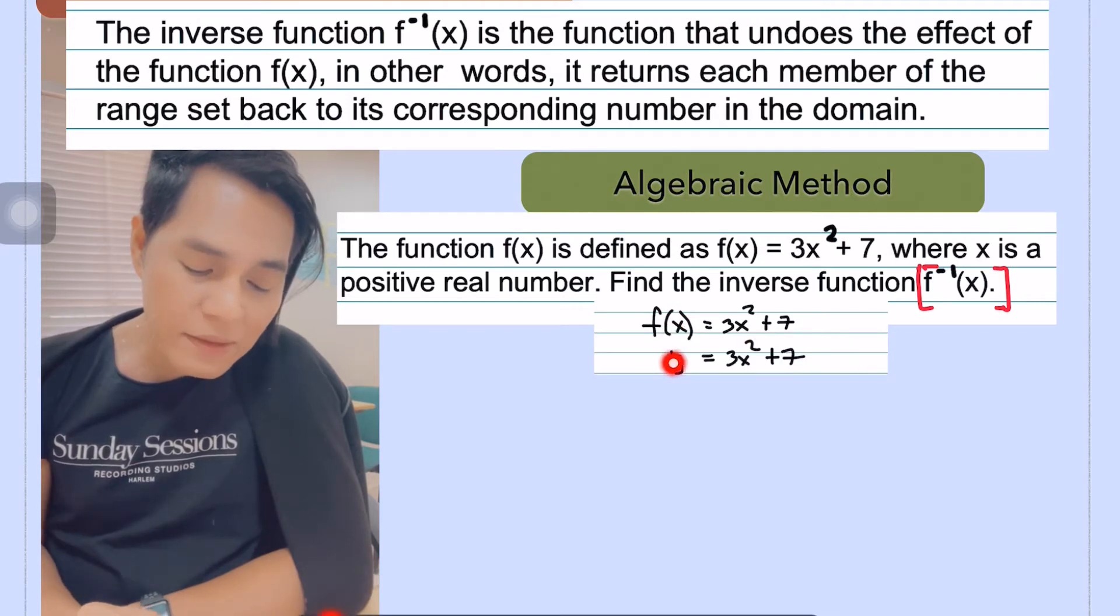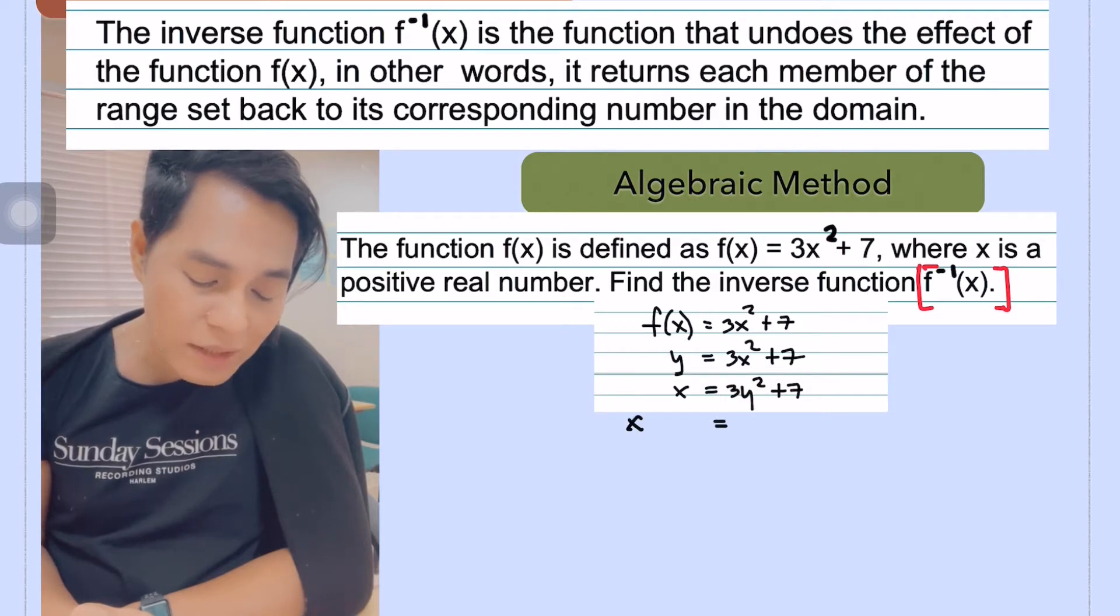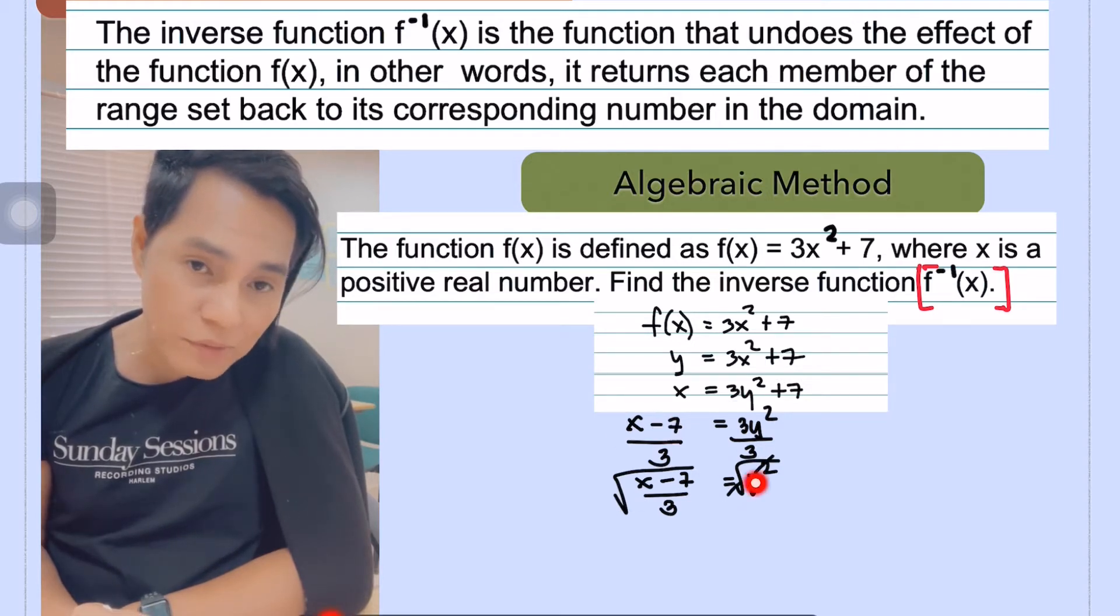So the first thing to do is we are just rewriting first the given function and then we change this f(x) to y and then change y to x and then x to y. And then after that, we are going to change the subject. This time, we are going to get the value of y. So there you go, the steps, the algebraic procedure of doing that.